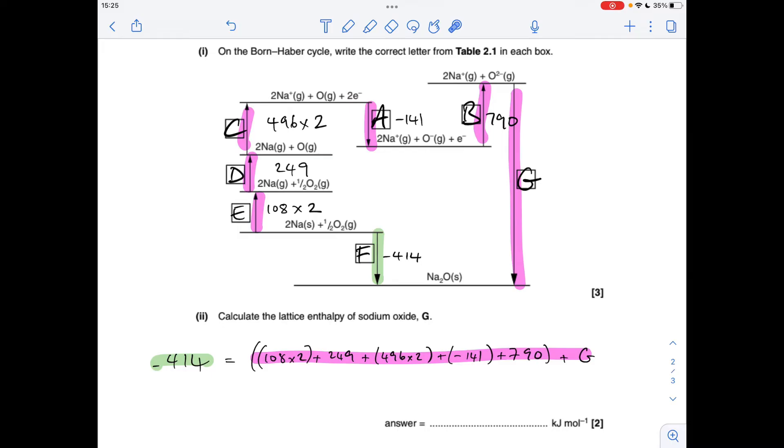The colors now: we've got two routes, we've got the green route and we've got the complicated pink route. Hess's law says that the sum of the enthalpy changes in each route equal each other, which gives us that there, and then all we need to do now is just solve for the lattice enthalpy. So this bracket here comes out to 2106, so minus 414 equals that plus G. Take that over the other side, flip the sign, gives a lattice enthalpy of minus 2520 kJ/mol.